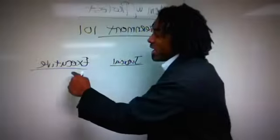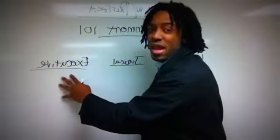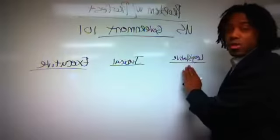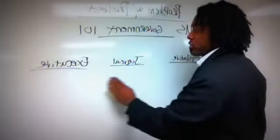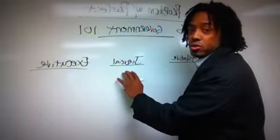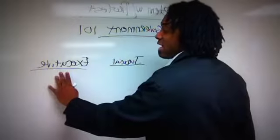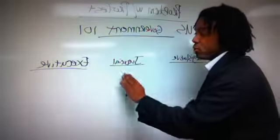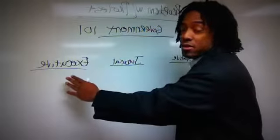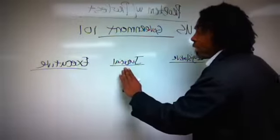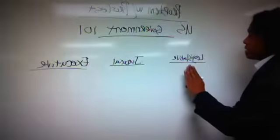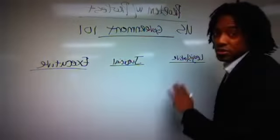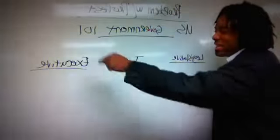Then there's the executive branch, and the executive branch basically carries out the mandates of these other two. The executive branch does what the law says, and carries out whatever the judiciary says. The judicial branch for us is the Supreme Court, that's the highest court, and the executive office is that of the President of the United States. The president carries out what the judicial branch says and executes what the legislative branch says.